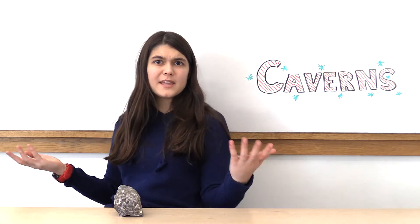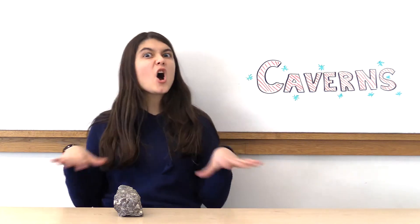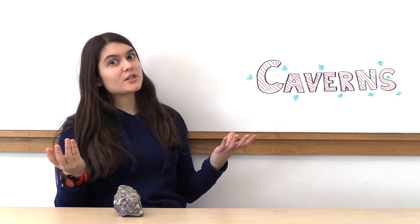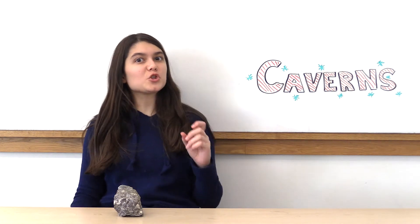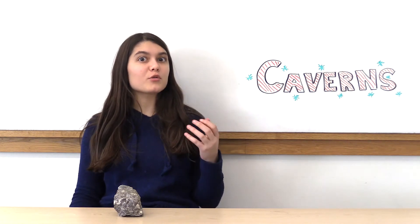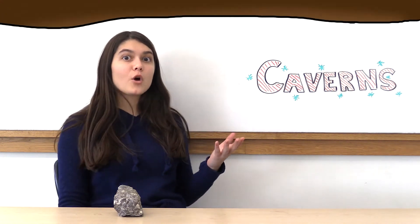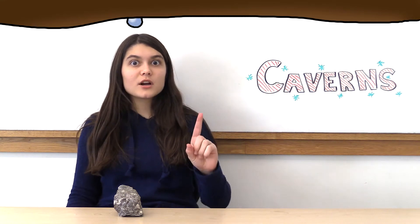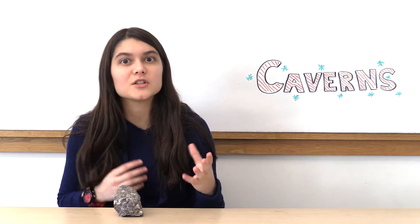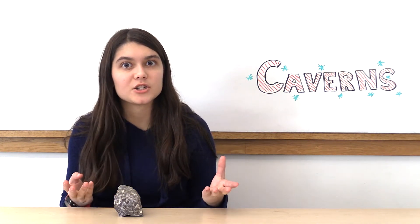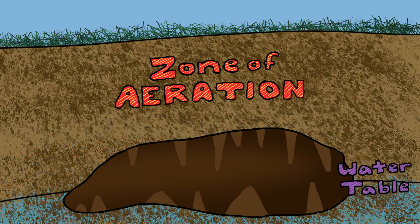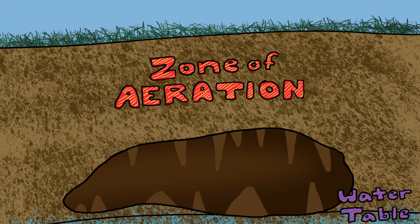Of course, we can't forget the most iconic cave features of them all. Also known as dripstone, travertine is a depositional stone formation formed by the dripping of water through the roof of the cave. This process only happens when the cave is in the Zone of Aeration. Over time, water tables move, so what was once in the Zone of Saturation is now in the Zone of Aeration.